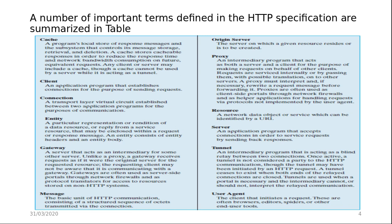A message is a basic unit of HTTP communication, consisting of a structured sequence of octets transmitted via connections. The origin server is the server on which a given resource resides at the end of the network. A proxy is an intermediary program that acts as both a server and a client for the purpose of making requests on behalf of other clients. Requests are serviced internally or by passing them, with possible translation, onto other servers. A proxy must interpret and, if necessary, rewrite a request message before forwarding it. Proxies are often used as client-side portals through network firewalls and as helper applications for handling requests via protocols not implemented by the user agent.